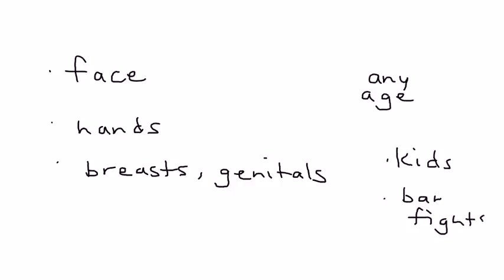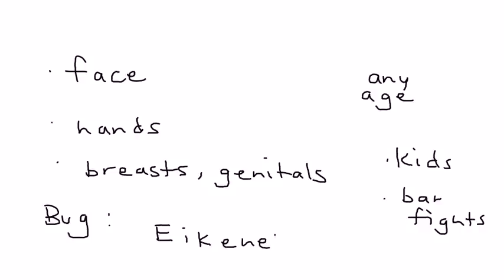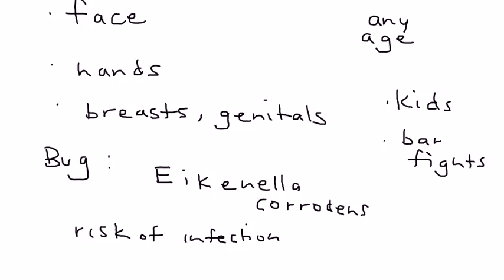The bug that lives in the human mouth is known as Eikenella corrodens. The risk of infection is actually quite high and can go on to cause things such as cellulitis if not appropriately treated.